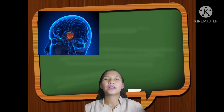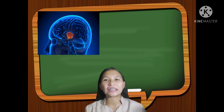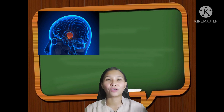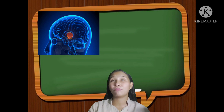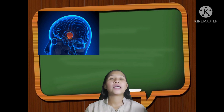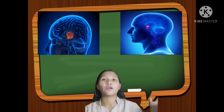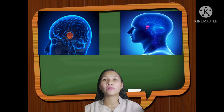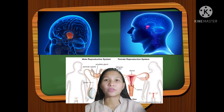The human female and male reproductive cycles are controlled by the interaction of hormones from the hypothalamus and the anterior pituitary gland, with hormones from the reproductive system, brain, and hypothalamus.